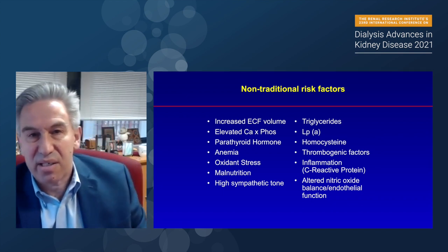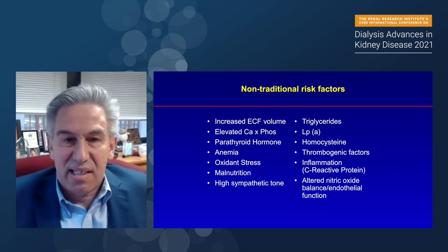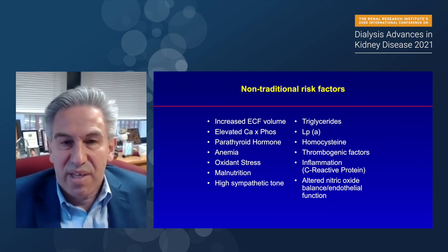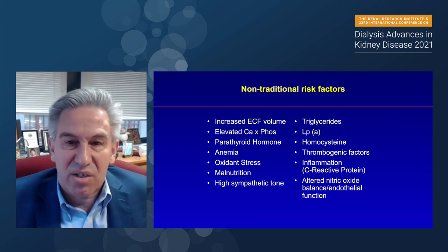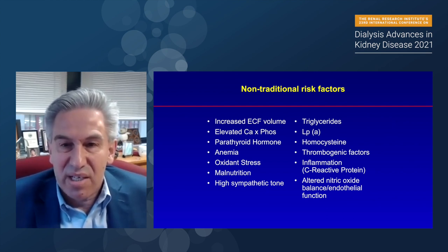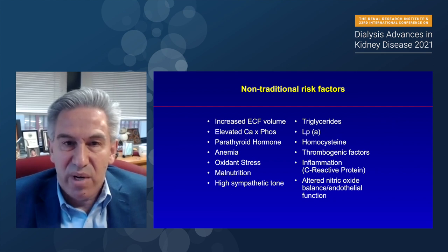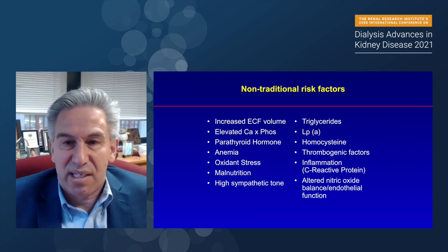We also need to consider non-traditional risk factors in kidney disease that are playing a role. Some are unique to kidney disease patients, including elevated calcium, phosphorus, parathyroid hormone, and anemia. Others are present in the general population but at much higher prevalence in kidney disease: oxidant stress, high Lp(a), homocysteine, thrombogenic factors, and inflammation. We should be considering both traditional and non-traditional risk factors as risk factors for coronary disease in CKD.